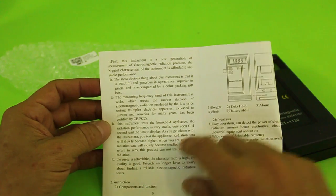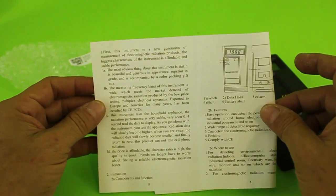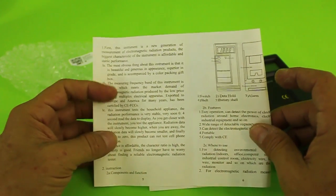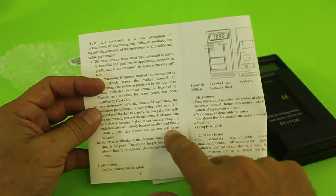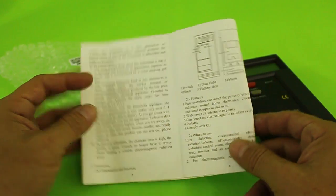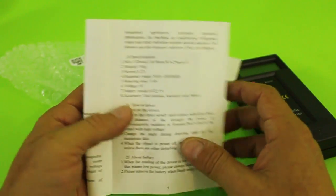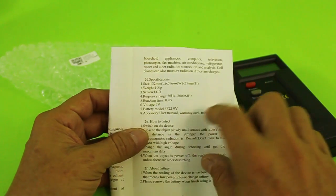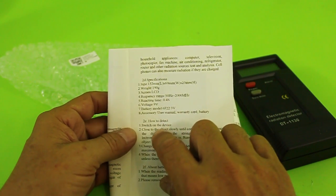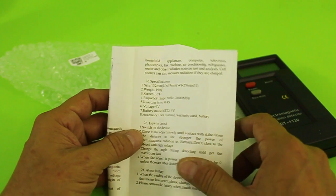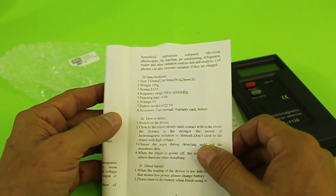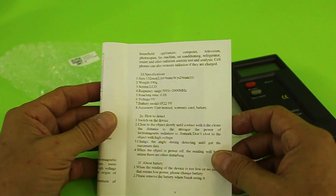Measuring frequency is wide and can test household appliances but not cell phones. The specifications frequency range is from 50 Hz to 2000 MHz and yes, cell phones use higher frequencies.